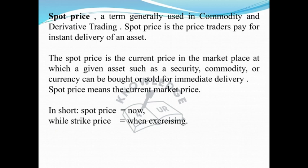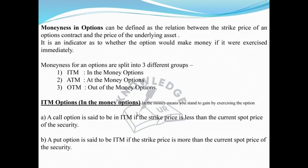Moneyness in options can be defined as the relationship between the strike price of an options contract and the price of the underlying asset. It is an indicator as to whether the option would make money if it were exercised immediately.